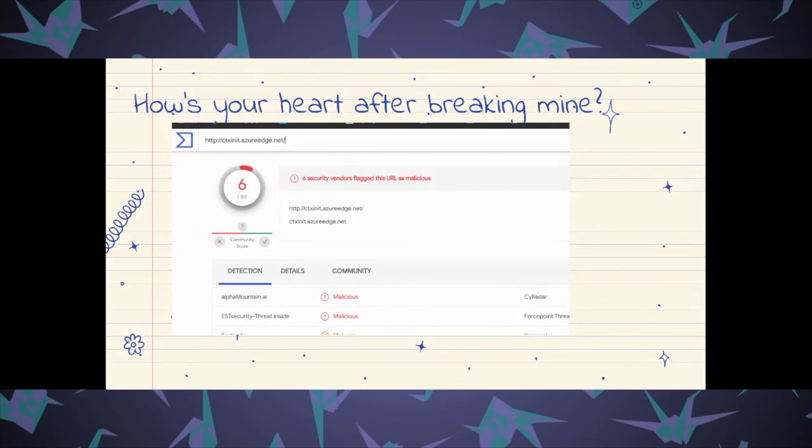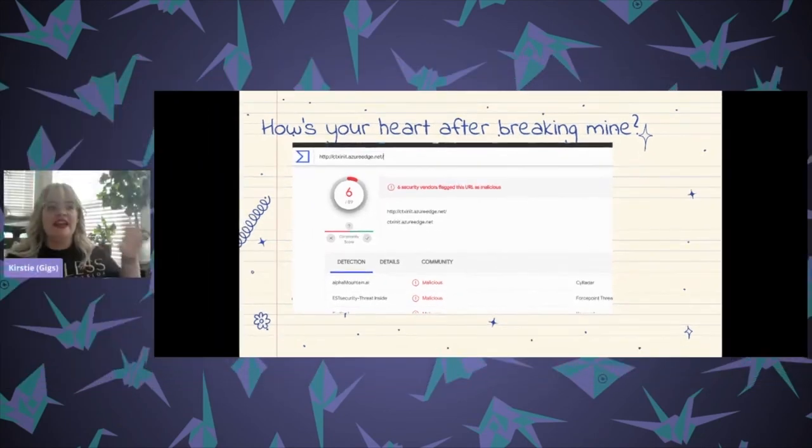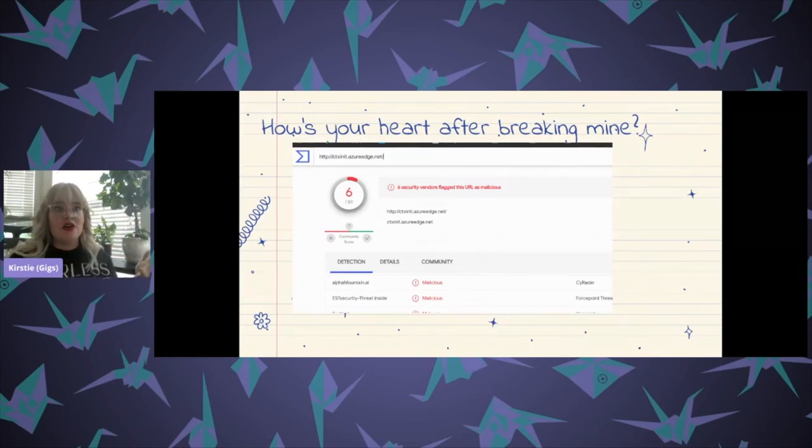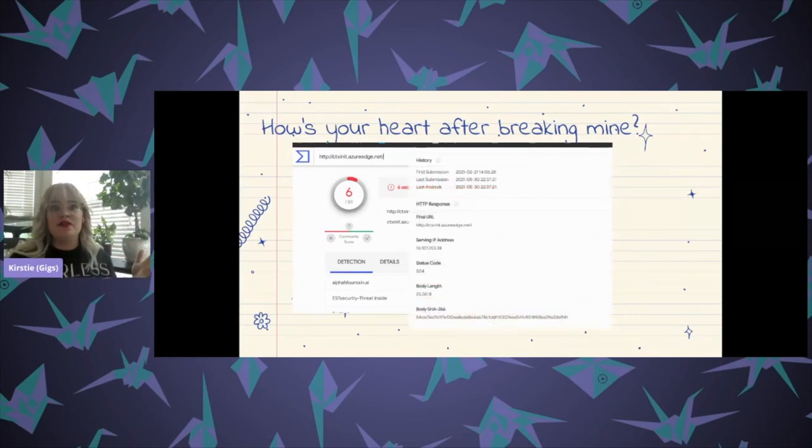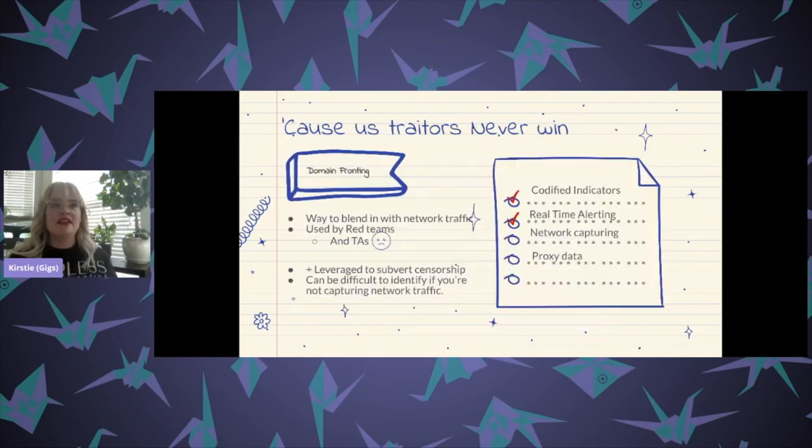So if you know anything about the way Azure works, this is actually a domain that can be fronted. And VirusTotal doesn't really give us a lot of information because it is a legitimate domain. But because it was in our blog, we know that it is bad, right? We know that it was used in a malicious fashion. So the way that the attacker did that was they fronted the domain. They leveraged, they basically abused the way that a content delivery network is configured.